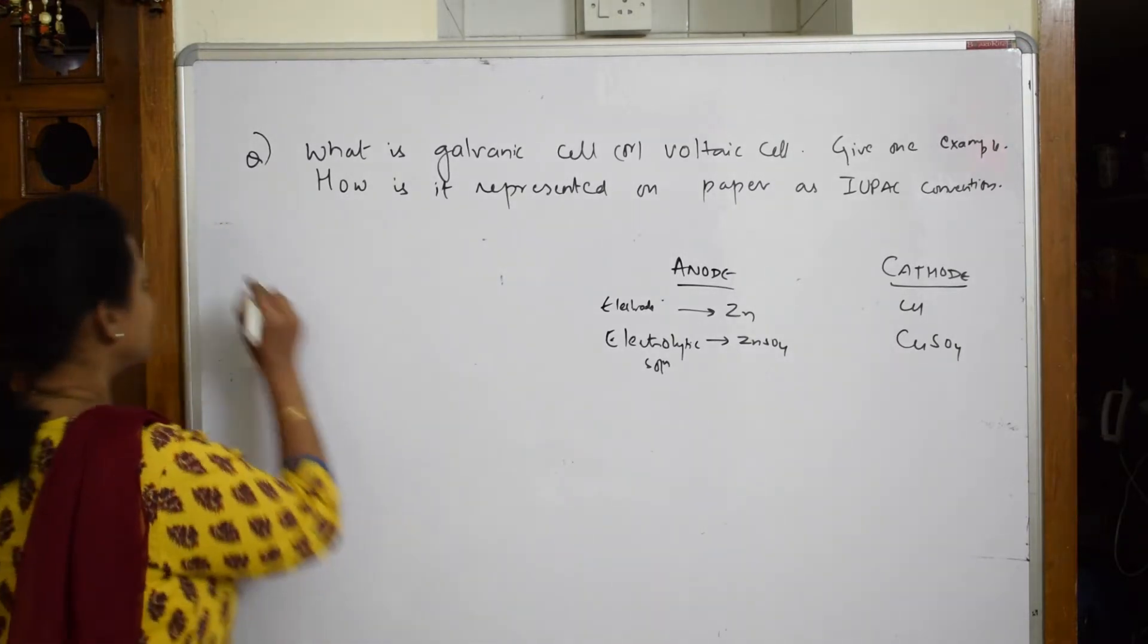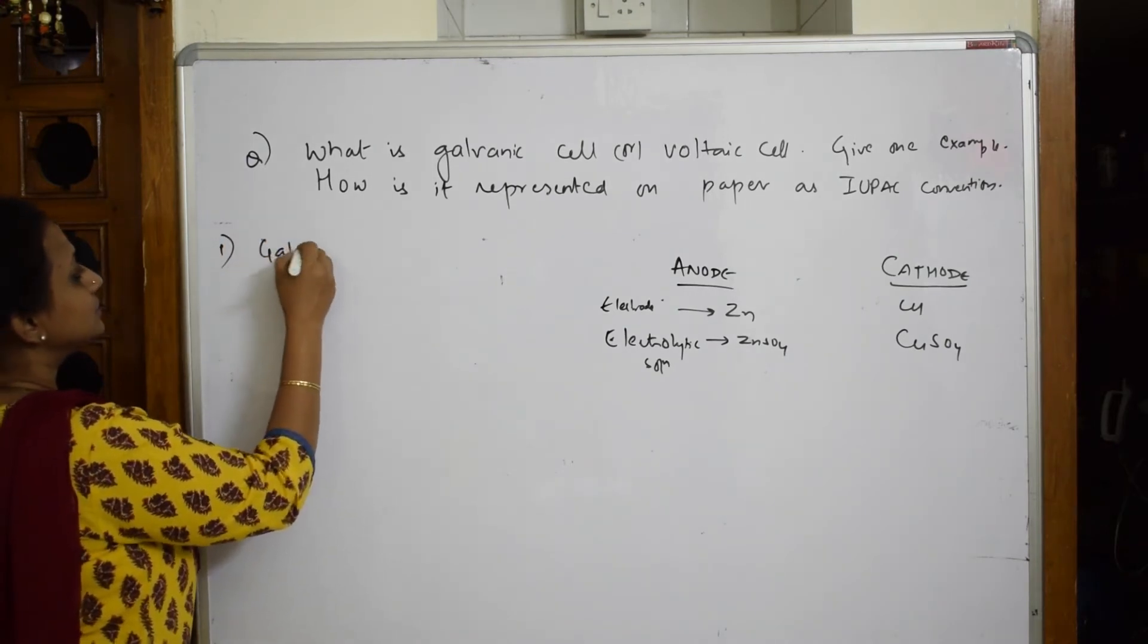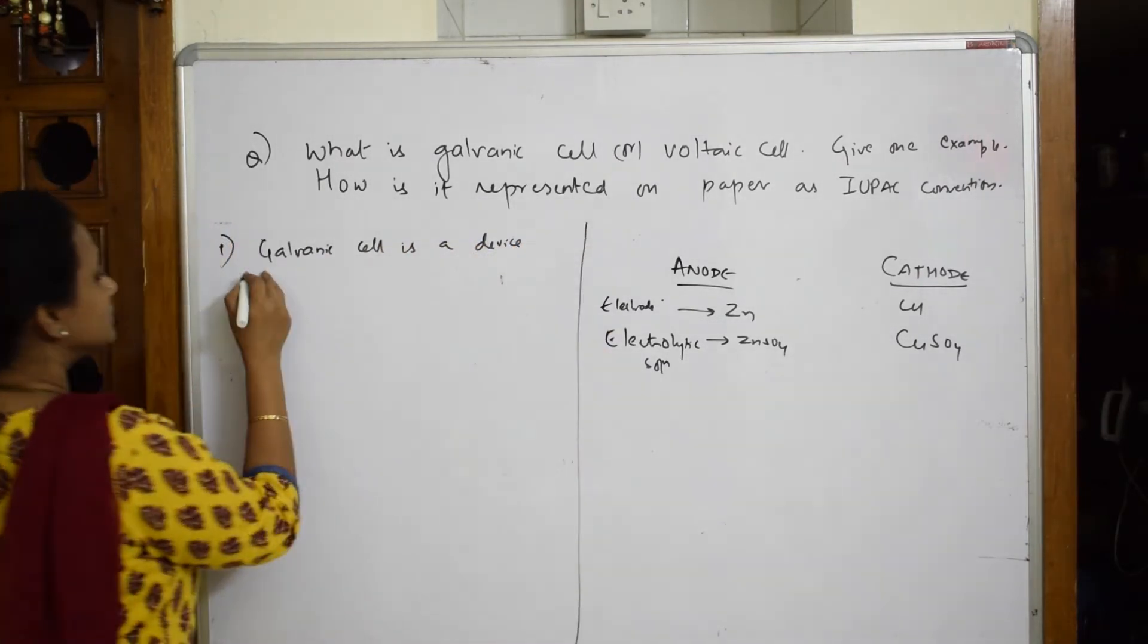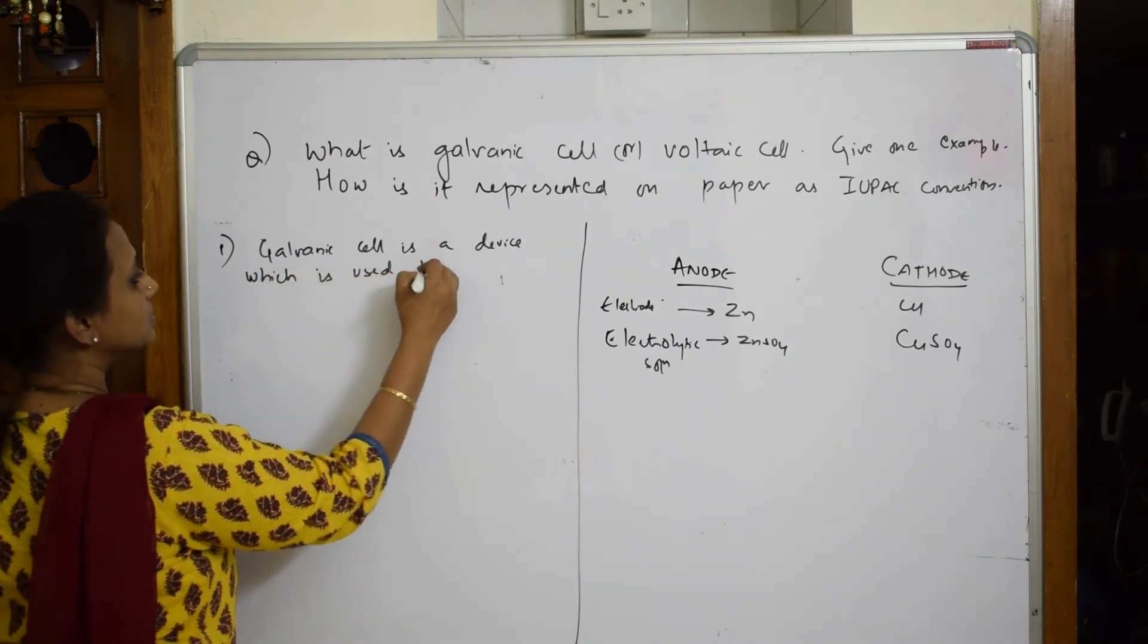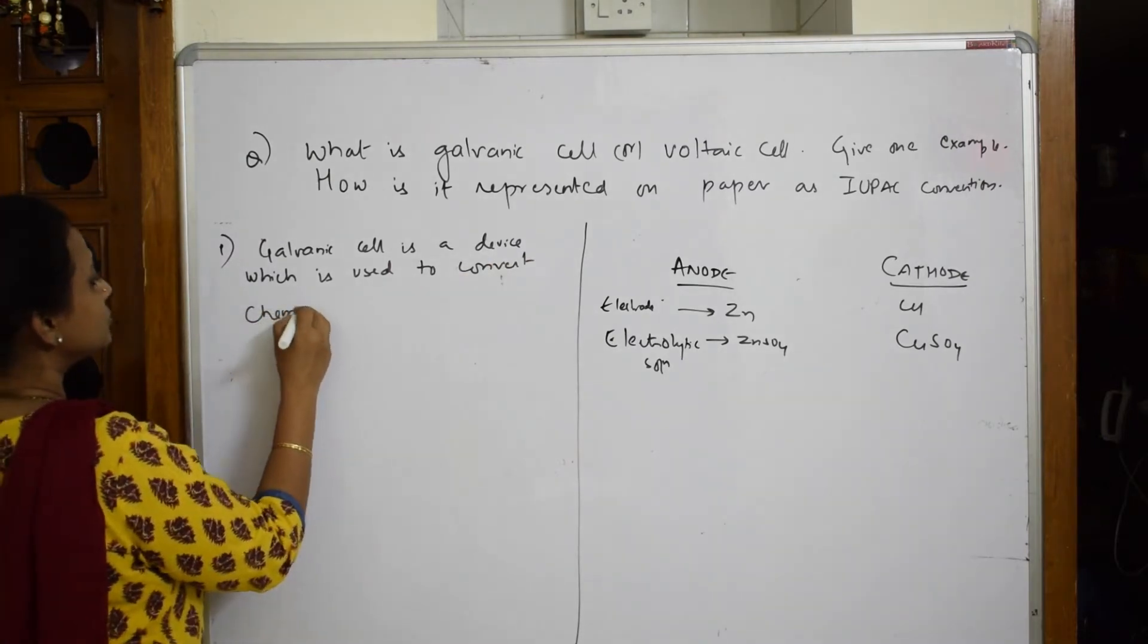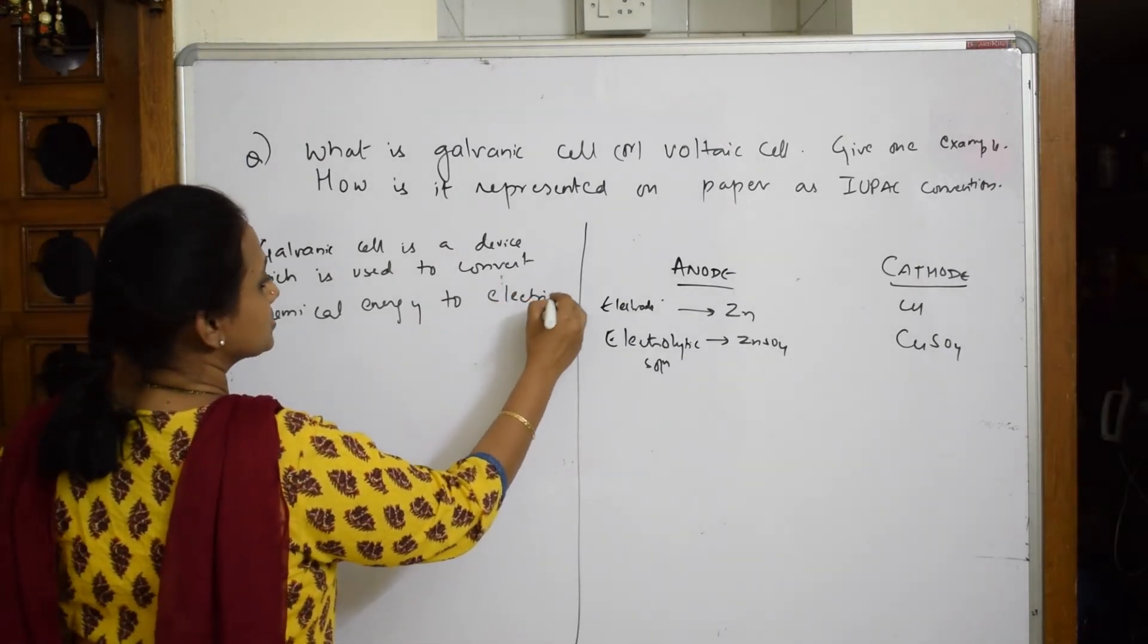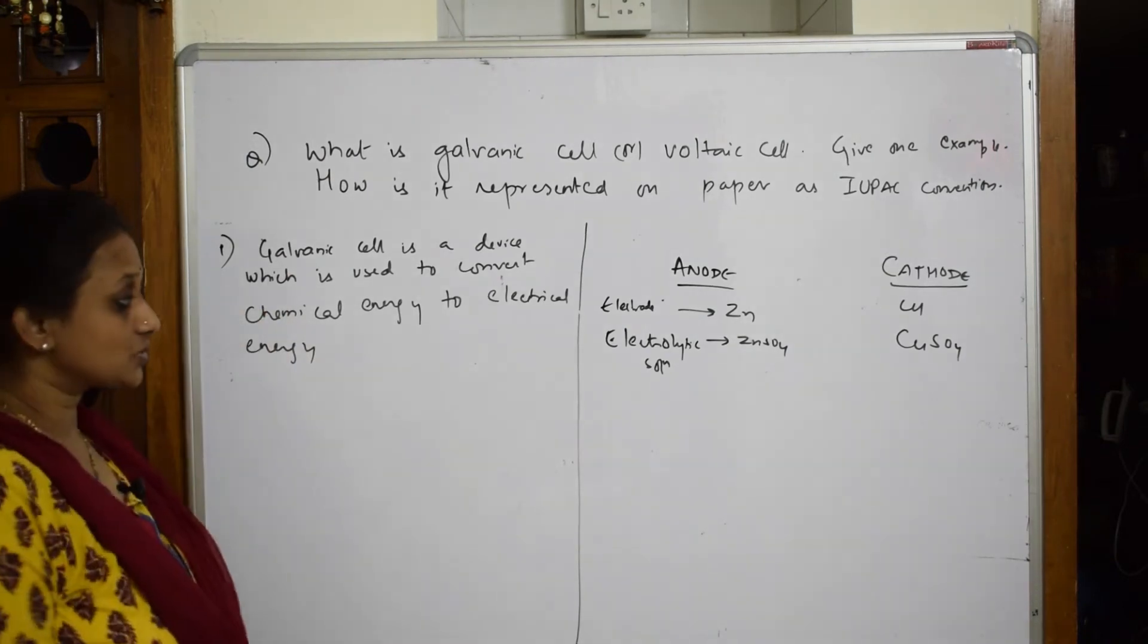I've already written what is galvanic cell: it is a conversion of chemical energy to electrical energy. So let us write that first. First point: galvanic cell is a device, I'm showing you how to write it in the exam. A device which is used to convert chemical energy to electrical energy. This is also one which I already learned.